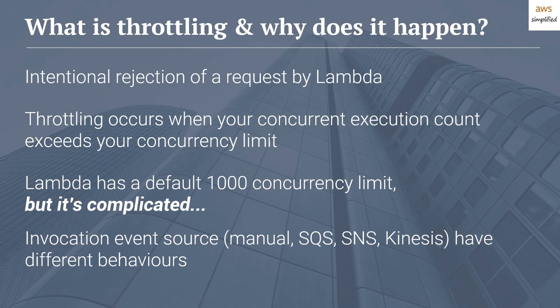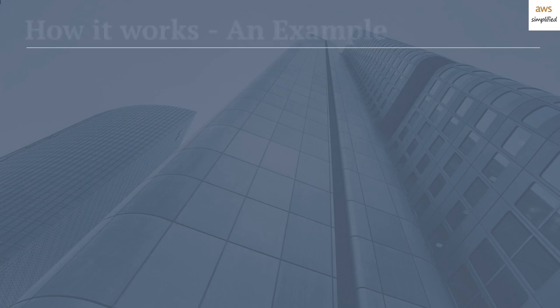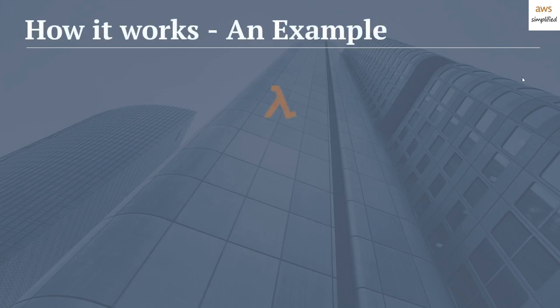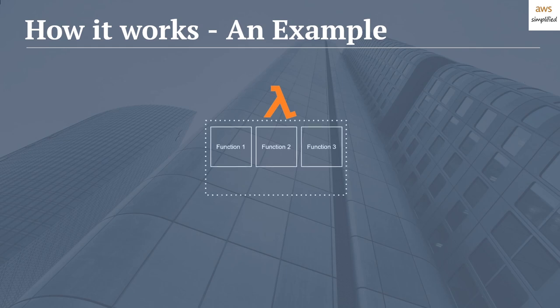Now that we know what throttling is, let's go over a quick practical example covering how this works in a more real-life scenario. Here we have a Lambda setup where I have three functions in my region: function one, function two, and function three. Depending on your circumstance, you may have three separate functions or maybe only one. In this example, let's assume that these are all completely unrelated functions doing totally separate things.